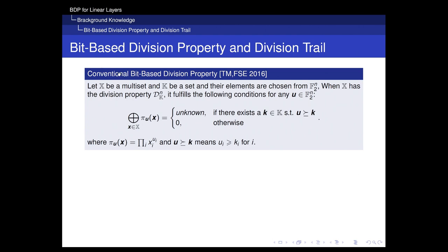In this paper, we focus on the conventional bit-based division property, also known as the two-subset bit-based division property. For all vectors u belonging to F₂ⁿ, we can divide them into two parts according to this formula. Here, x is a multi-set, which could be the multi-set of the plaintexts, ciphertexts, or the intermediate states. For u in the first part, this summation will always be zero. For u in the remaining part, the value of the summation cannot be predicted.